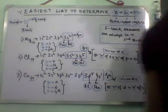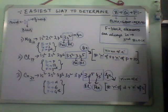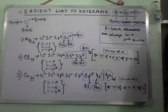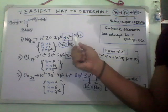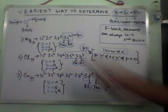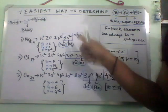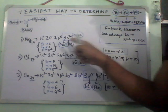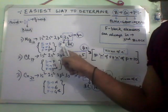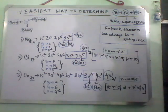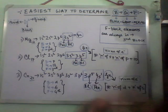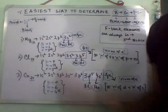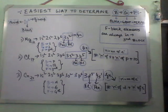This is magnesium, whose atomic number is 12. We write the electronic configuration: 1s2 2s2 2p6 3s2. Compare it with the criteria: the '2' here is the group, 's' is the block, and '3' is the period. BGP — block, group, period — s is the block, group is the second, and period is the third.